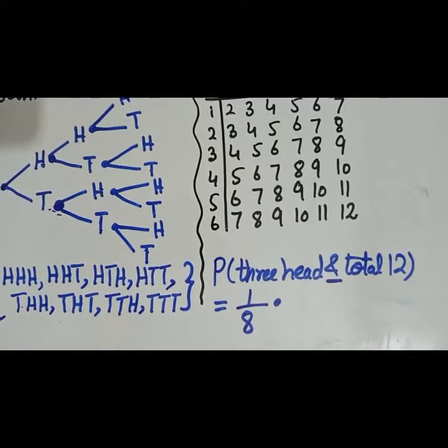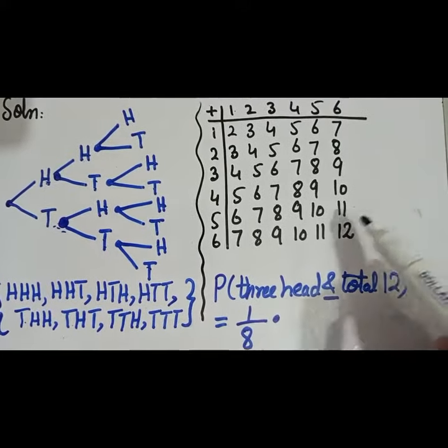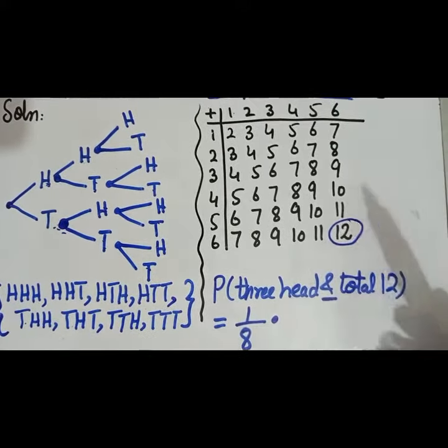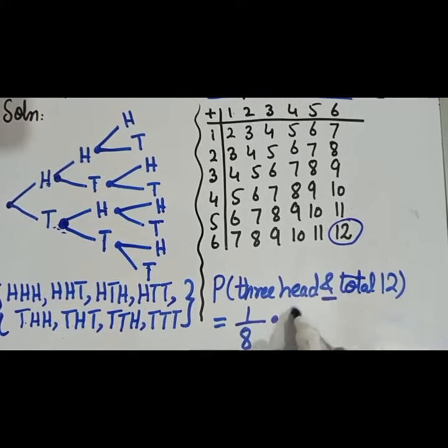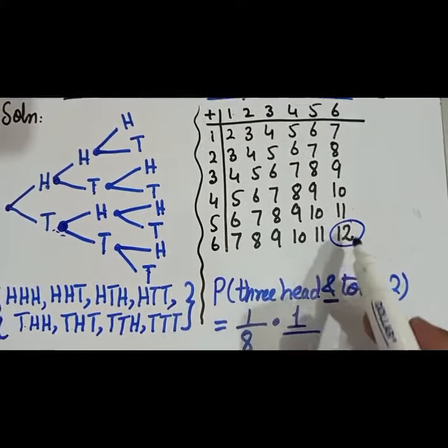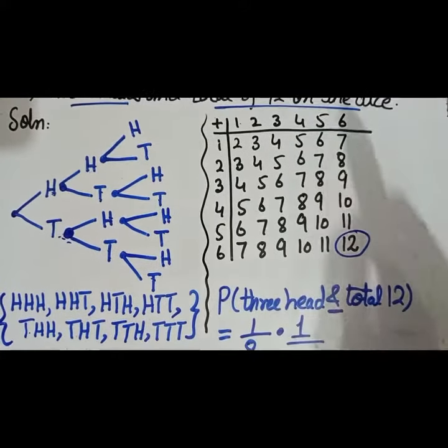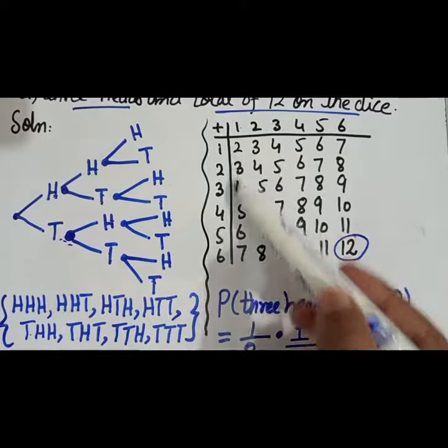That is only one. Look at here. So only one chance to get the total twelve. So one by how many total outcomes are there when two dice are thrown? That are basically thirty-six. You are supposed to count this portion.